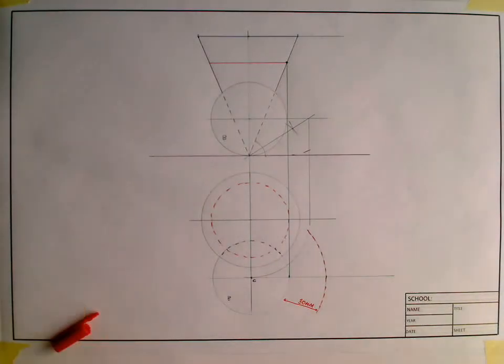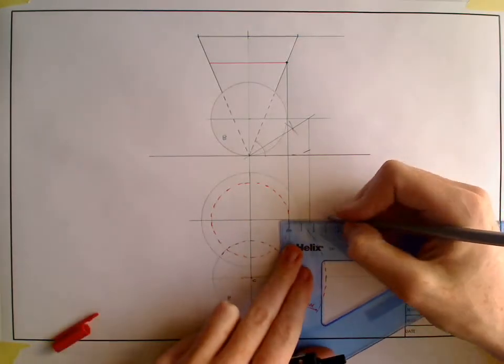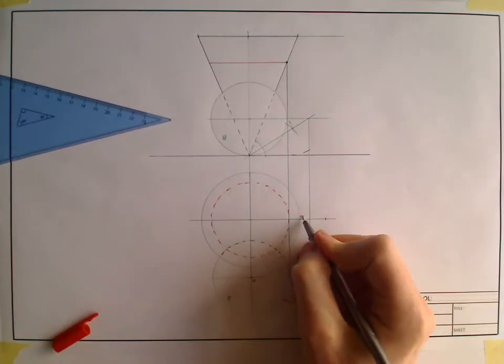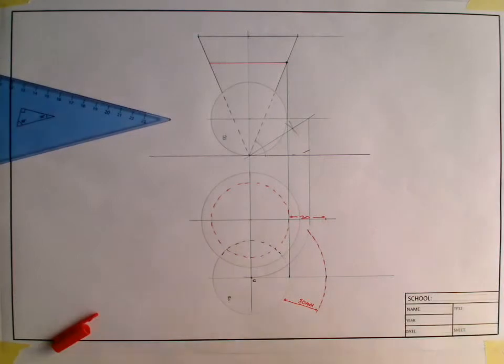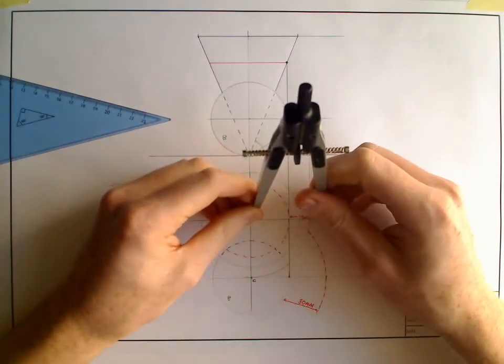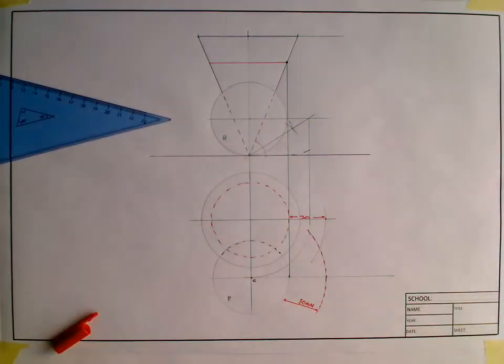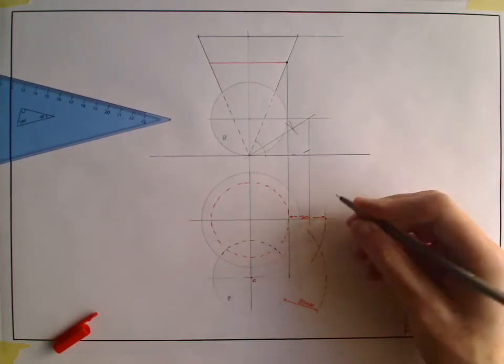So next step then, I have to add on 30mm from that edge there. I swing an arc from the center. Those two arcs cross, that's the position of my cylinder.